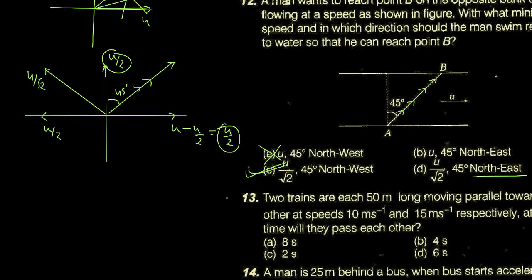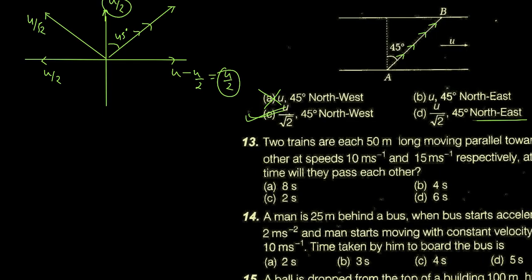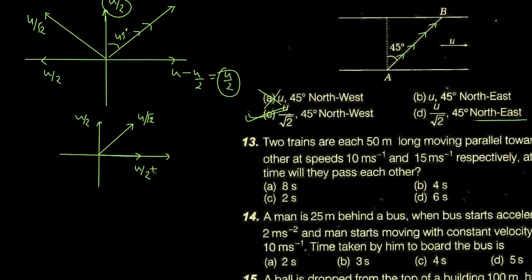چوتھا option D: u/√2 north east۔ اس direction میں u/√2 ہے اور اس کے sin اور cos components u/2 اور u/2 آئیں گے۔ River کی velocity بھی u اسی طرف ہے تو net velocity x-direction میں u/2 + u = 3u/2 ہو گئی۔ Y-direction میں صرف u/2 ہے۔ 3u/2 ≠ u/2، تو resultant 45 degree پہ نہیں آئے گا — یہ answer بھی نہیں بنے گا۔ صرف C part answer ہے۔